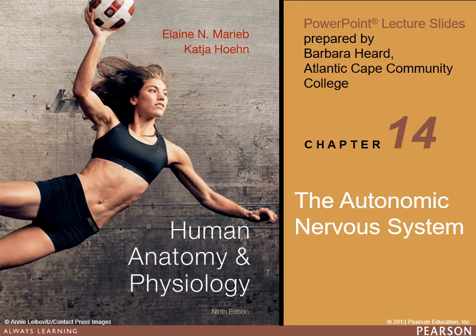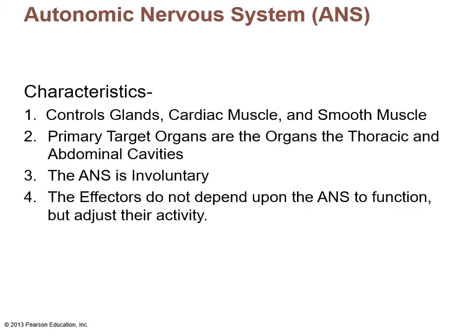This chapter covers the autonomic nervous system, a system that is out of your control. It controls such things as glands of the body, cardiac muscle, and smooth muscle. Primary target organs are located in the thoracic cavity and the abdominal cavity. The autonomic nervous system is involuntary, and the effectors are cardiac muscle, glands, and smooth muscle. They do not depend on the autonomic nervous system to function, but they adjust their activity.